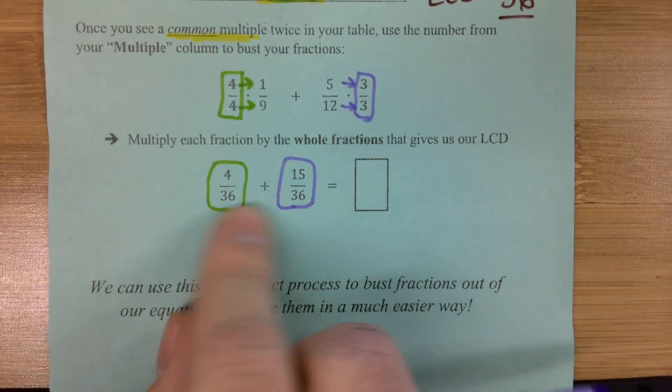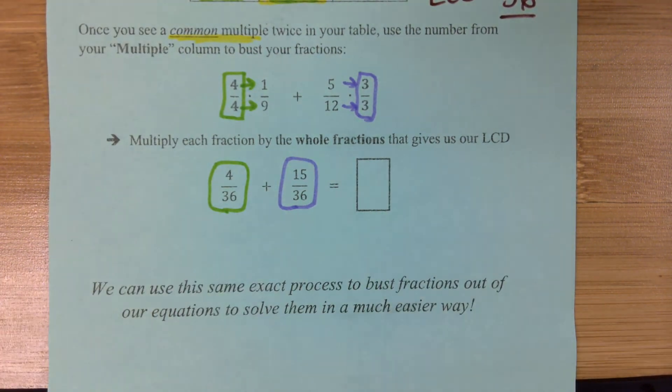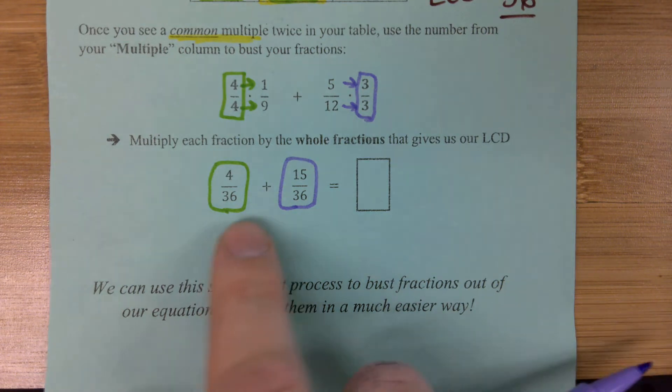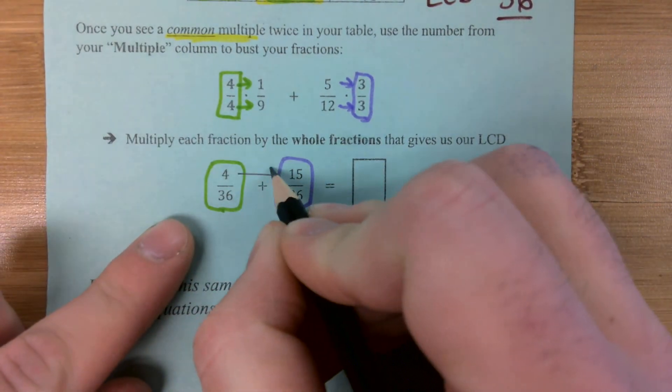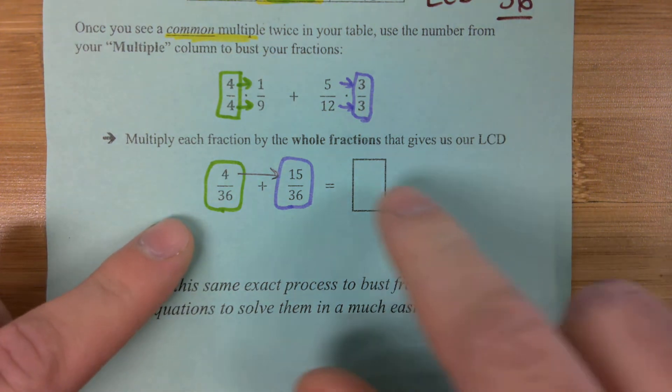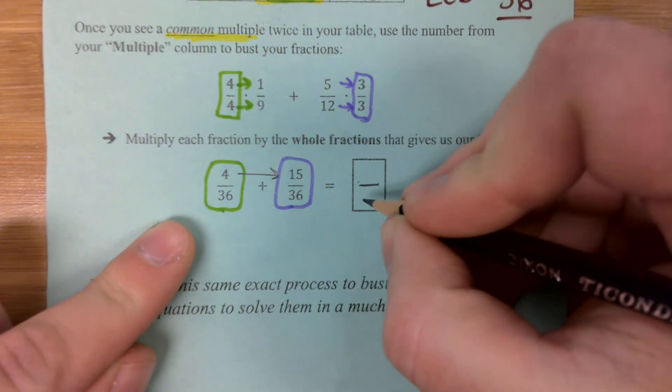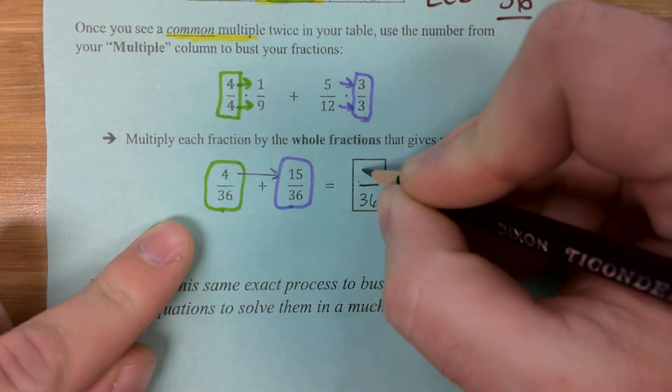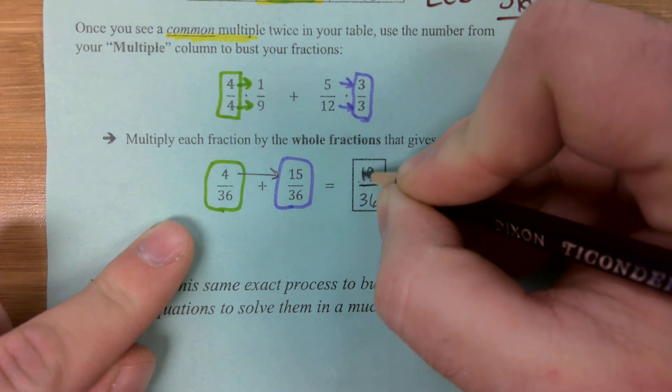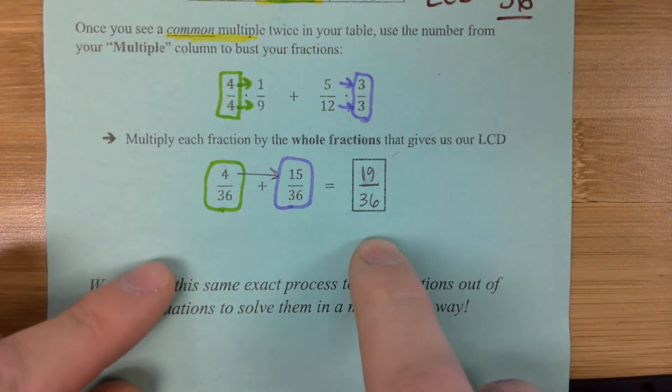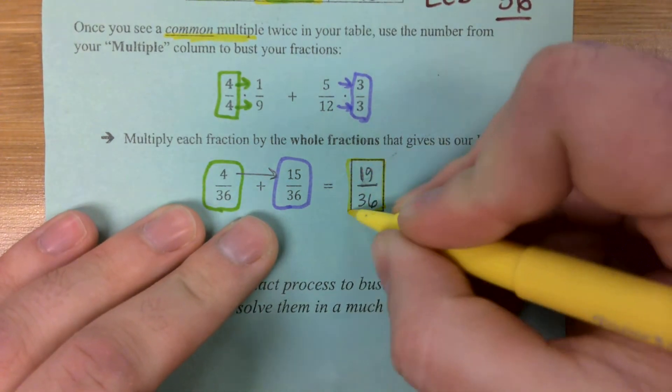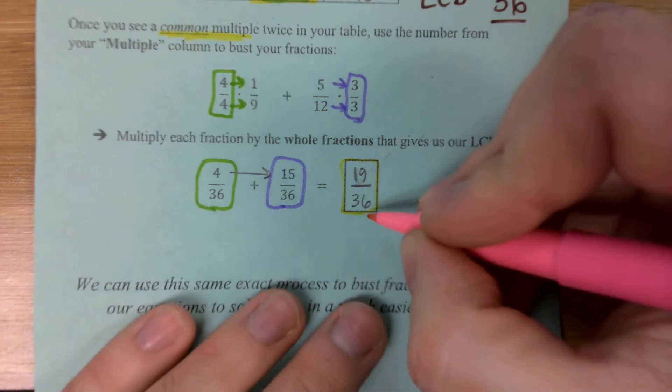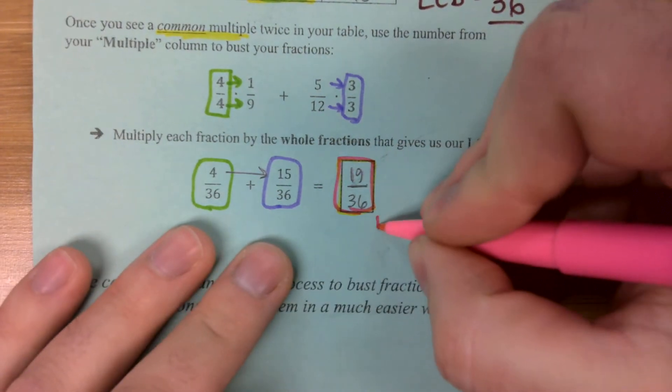Now, take a look here. Now we're adding these fractions. Like we mentioned in the warm-up, when we're adding fractions, do we change the denominator at all? No, we just add the numerators across. So what's our new numerator here? 19, and our denominator stays the same. It's going to be 36. That right there is our answer. 19 over 36.